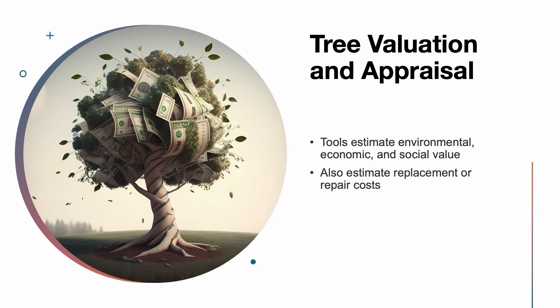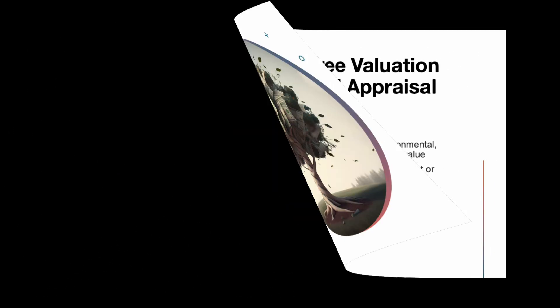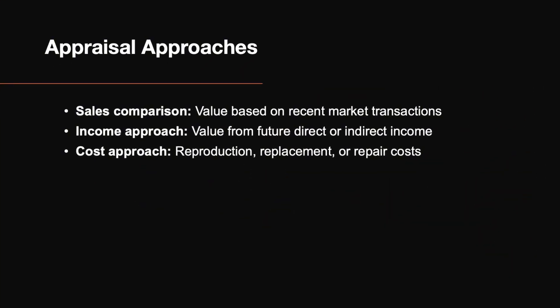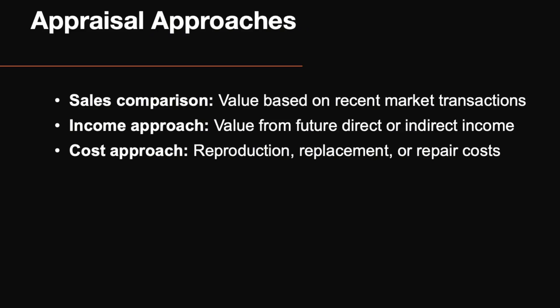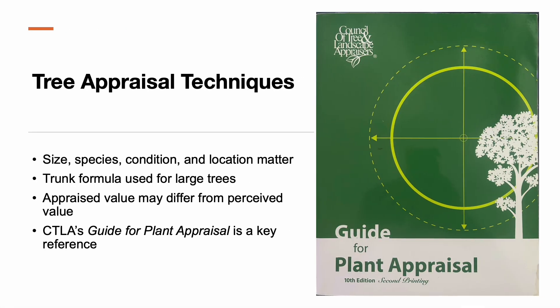Urban foresters use valuation tools to quantify the benefits of trees and to estimate replacement or repair costs. Valuation considers environmental, economic, and social contributions. Appraisal is the formal process of assigning value, important for insurance, legal cases, and municipal planning. There are three main approaches: the sales comparison approach, which looks at similar recent sales; the income approach, which calculates the present value of future benefits; and the cost approach, which estimates what it would cost to repair, replace, or reproduce the tree. Large trees are difficult to replace, so techniques like the trunk formula are used, multiplying nursery stock costs by trunk area. Other techniques consider species, size, condition, and location. The Guide for Plant Appraisal by the CTLA is widely used in North America.